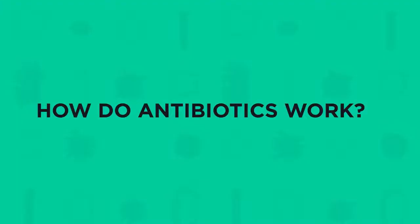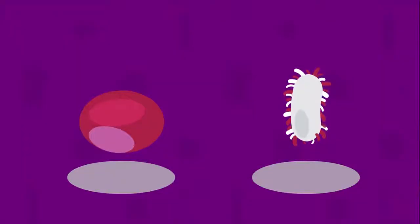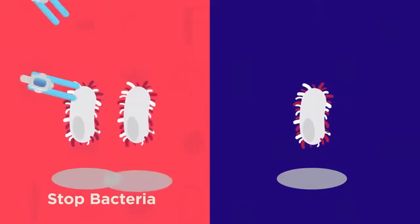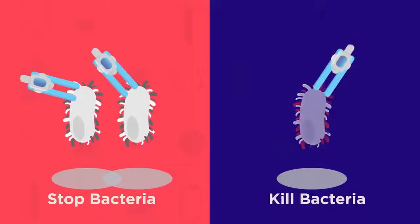So how do antibiotics actually work? Antibiotics affect specific parts of bacterial cells which human cells don't have. They stop the bacterial infection but do not harm the human cells. This is done in two ways, either by stopping the bacteria from reproducing or by killing the bacteria.